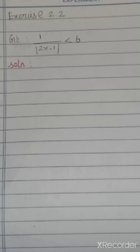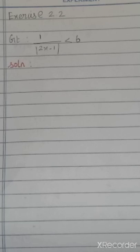So what is exercise 2.2? Absolute value — we saw in the last class itself, right? So what is meant by absolute value? Absolute value means mod x. Mod is your absolute value. So what is meant by mod x? Both positive and negative value. So mod x — it may be x or minus x. We are going to solve the absolute value and find the x value. Take your exercise 2.2.